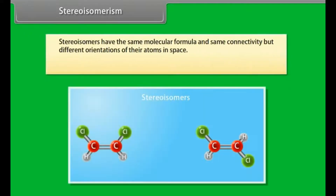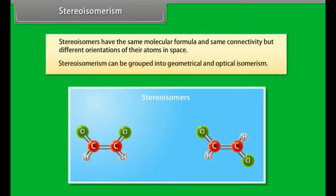Stereoisomerism. Stereoisomers have the same molecular formula and same connectivity but different orientations of their atoms in space. Stereoisomerism can be grouped into geometrical and optical isomerism.